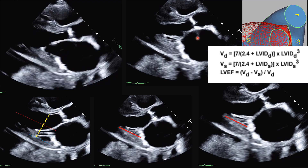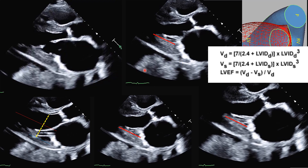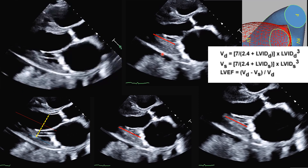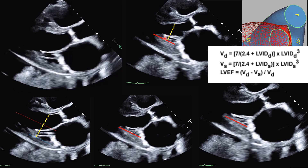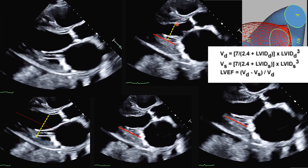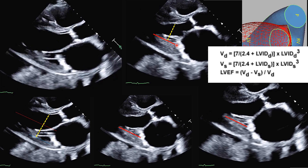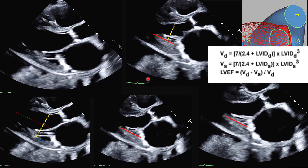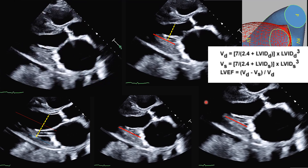At end-systole, we measure at the same spot used for the diastolic measurement — the same spot, perpendicular to the left ventricular long axis. The same approach applies to both diastole and systole. We make sure we do not include trabeculations, chordae tendineae, or papillary muscles. That is how we perform this measurement.